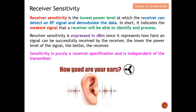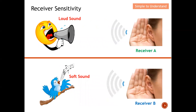Receiver sensitivity is something like our hearing — how much signal we can hear. As I defined earlier, receiver sensitivity is like our hearing threshold. I guarantee that if a sound is louder than this receiver sensitivity value, you will be able to hear the signal. If the sound is below this threshold, I cannot guarantee you will hear it. So receiver sensitivity determines whether we can or cannot receive the signal.